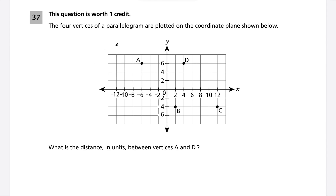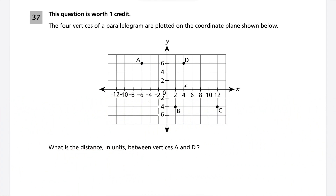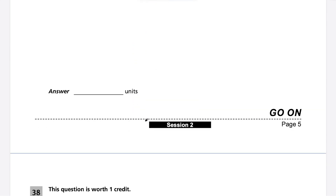Question 37: what is the distance in units between vertices A and D of a parallelogram on the coordinate plane? Counting boxes gives 5, but we must pay attention to scale — the x-axis counts by twos per box. So each box represents 2 units. Going across 5 boxes means 5 times 2 equals 10. The distance is 10 units.